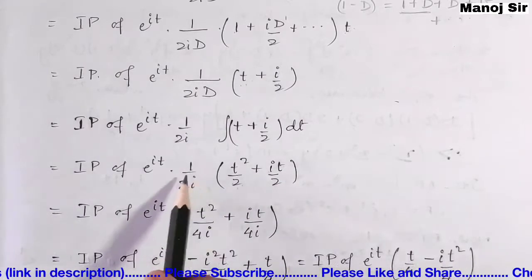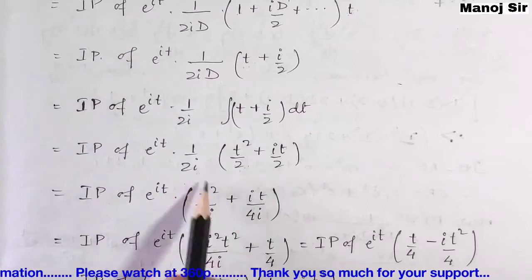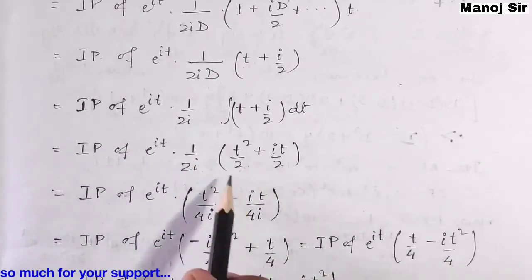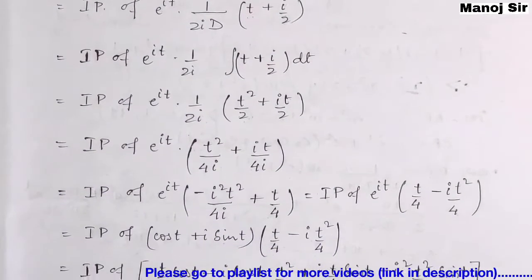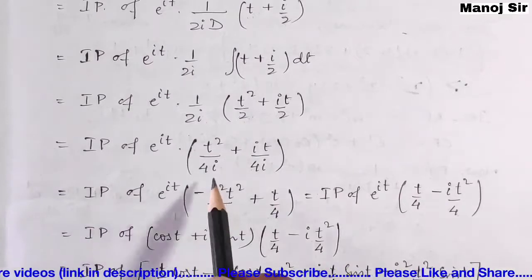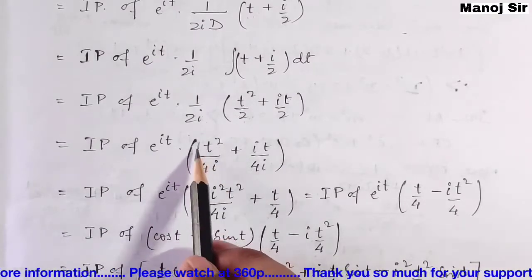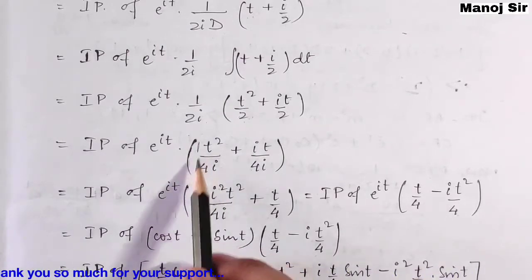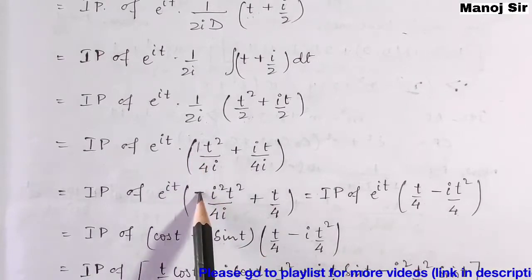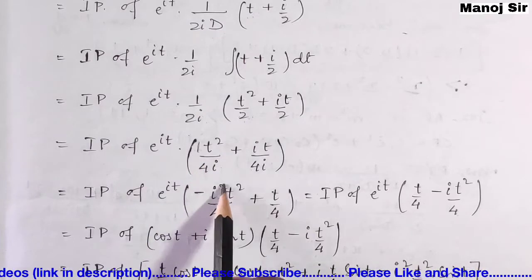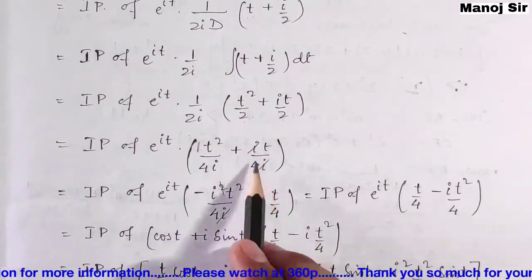Again i appears in the denominator. We write the coefficient 1 of t² as −i², since i² = −1 so −(−1) = 1. This cancels one i, leaving t/4. So we now have imaginary part of e^(it) · [−it²/4 + t/4].